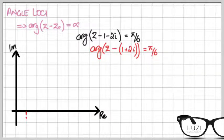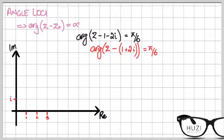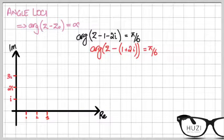Now set up your axes: mark 1, 2, 3 on the real axis, and 1i, 2i, 3i on the imaginary axis.